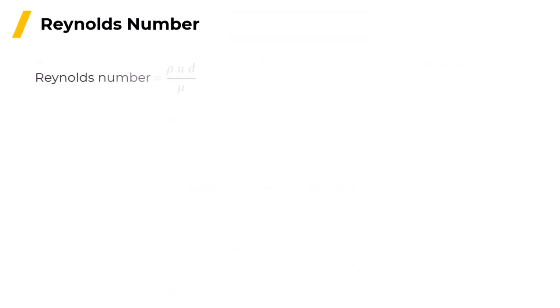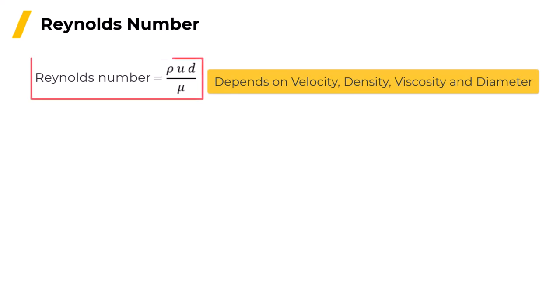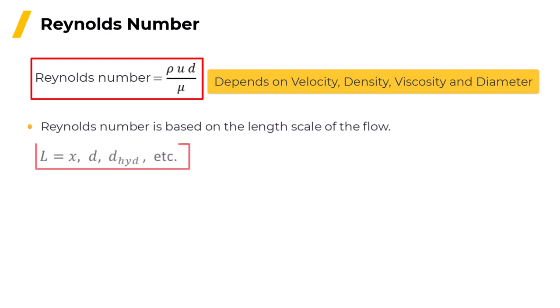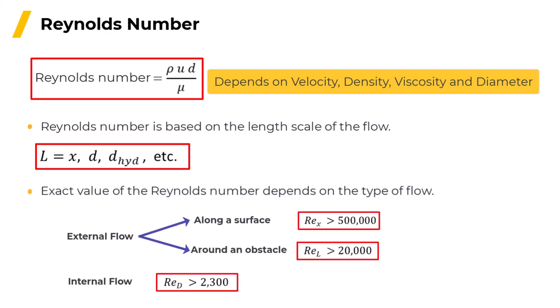Reynolds found that it's not only the velocity that determines when the flow becomes turbulent. It also depended on the density and viscosity of the fluid and the diameter of the pipe. He combined these into the dimensionless parameter, which is known as the Reynolds number. The Reynolds number doesn't only apply to pipes. The diameter can be replaced with another appropriate length scale, such as the distance from the leading edge of a boundary layer or the cross section of a bluff body. As you can see, turbulence begins at different Reynolds numbers for different kinds of flows.